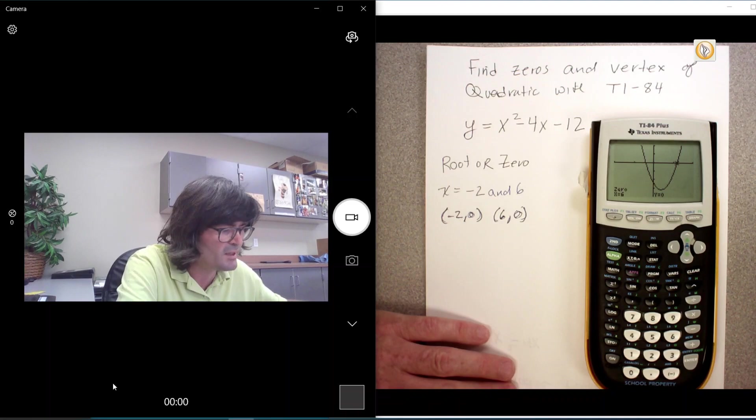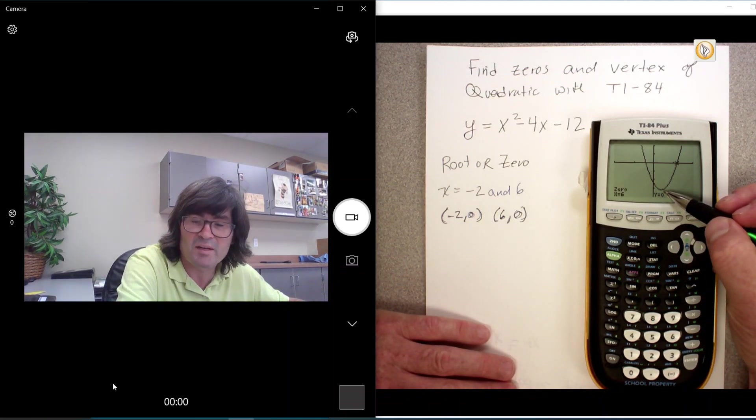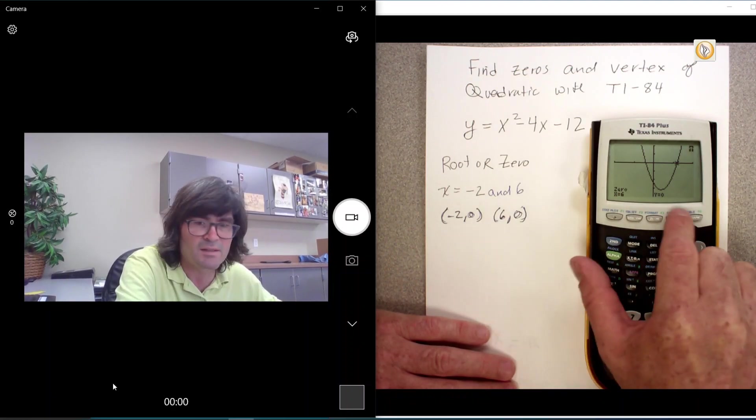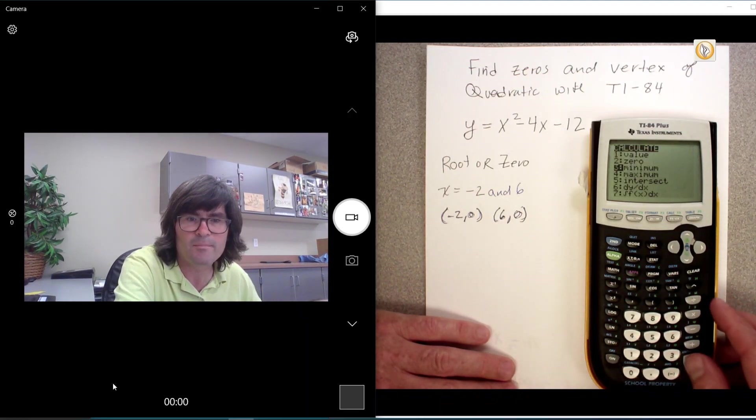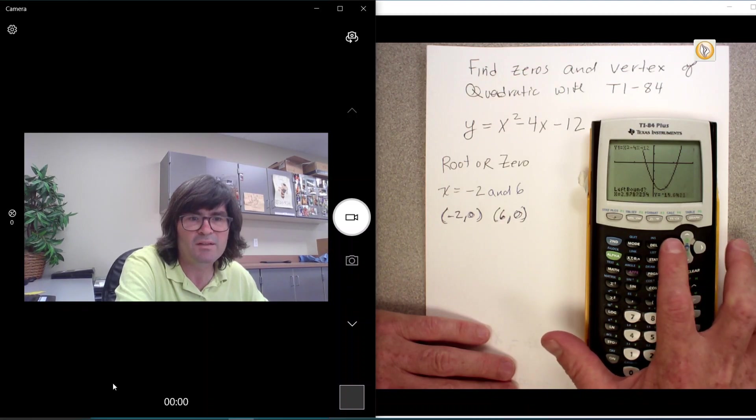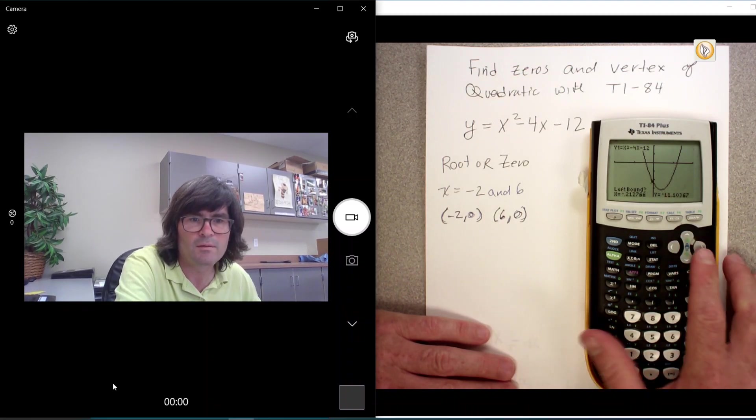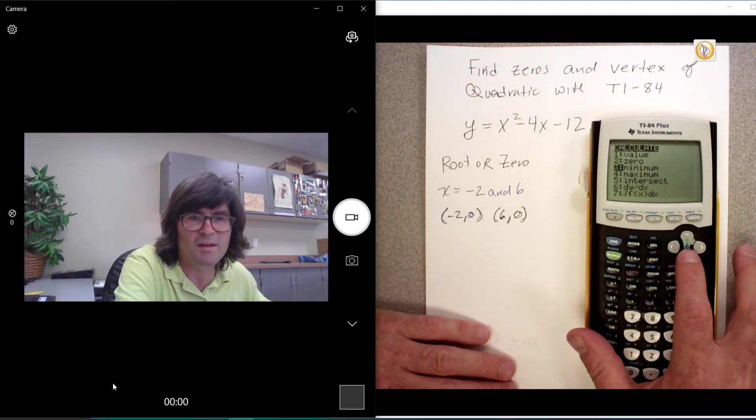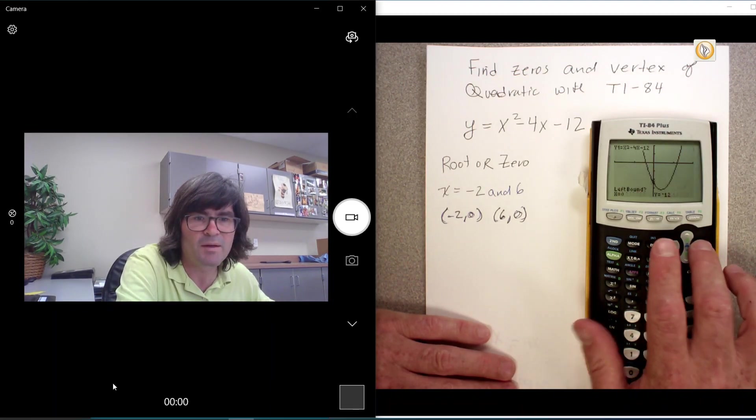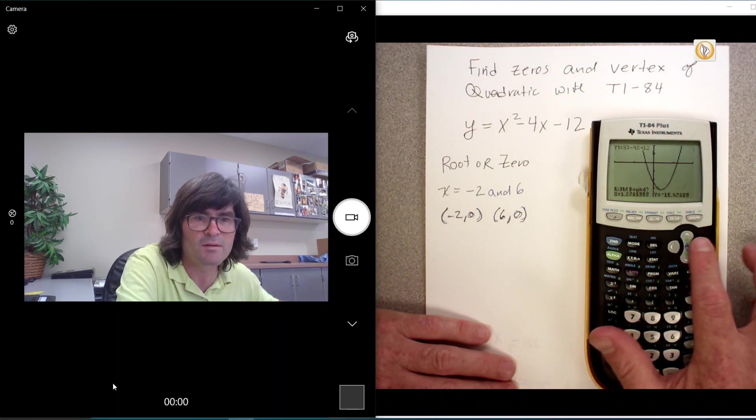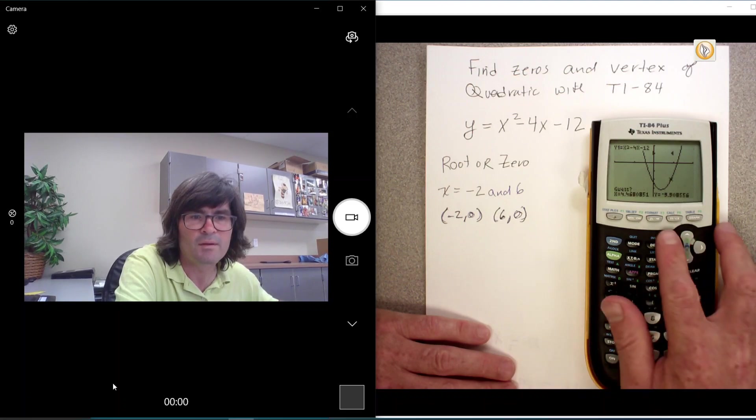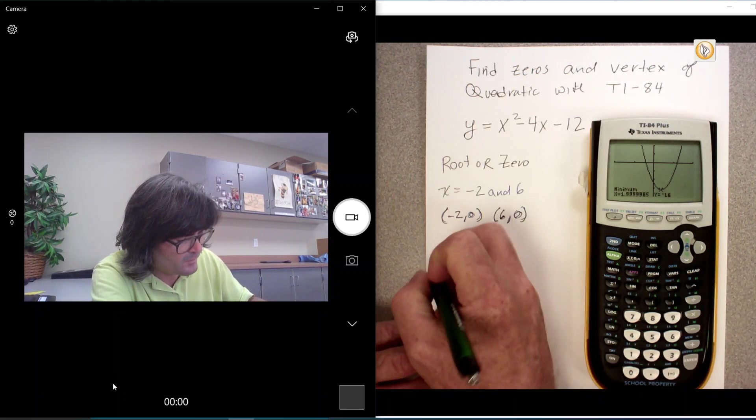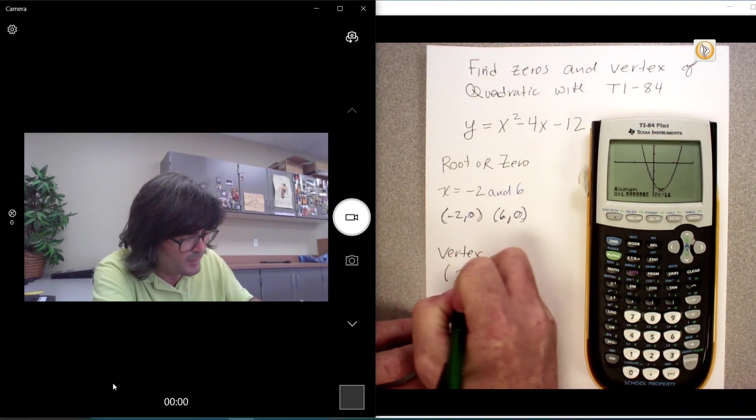Let's find the vertex now. The vertex is this point right down at the bottom. Because this is opening up, the vertex is going to be a minimum. If it were opening down, you would look for a maximum. So again go to calc, second calc, go down and ask for a minimum. And then we go left of the minimum. Use my arrow key. That looks good. Try it again. Second calc, find a minimum. There's a left bound point. That looks good. And then right bound. There we go. And then guess. And so my vertex is 2, negative 16.